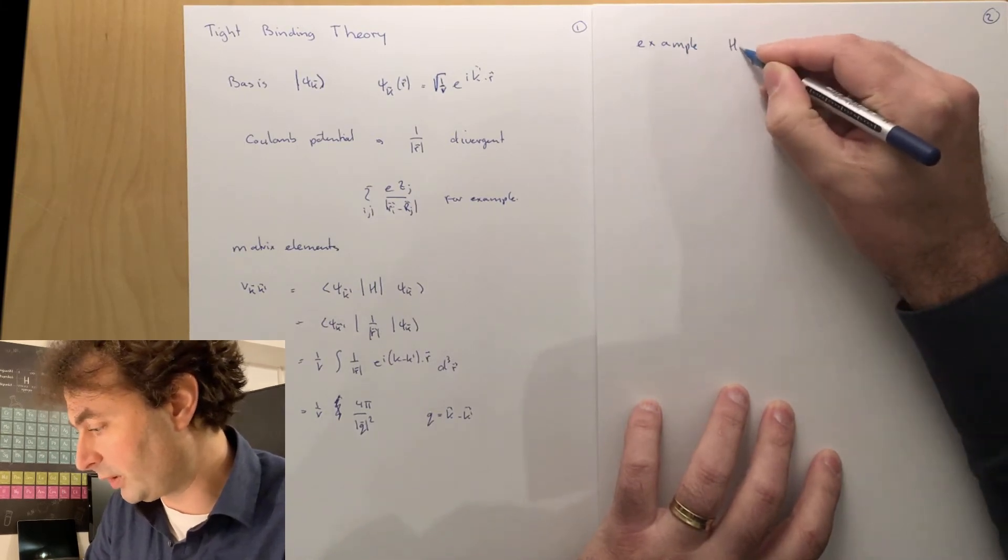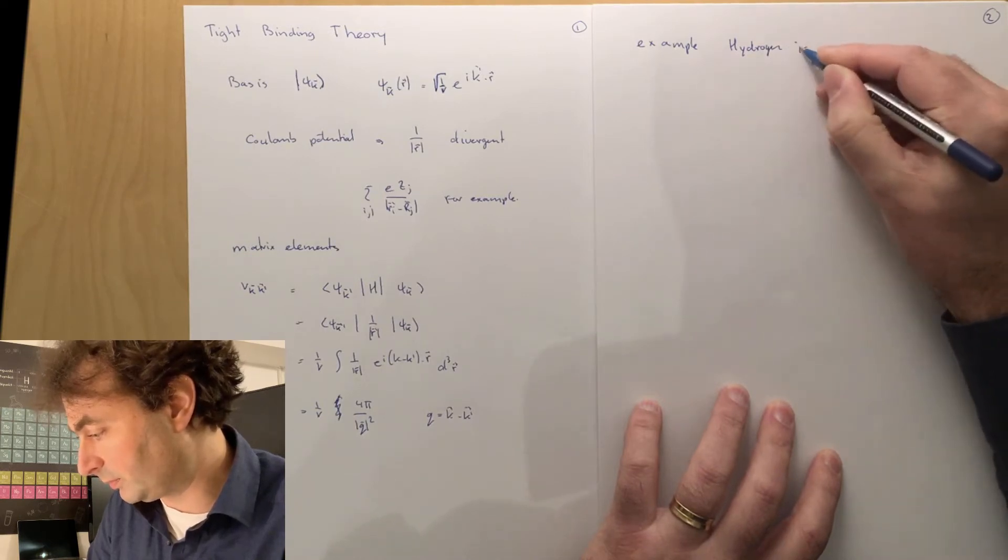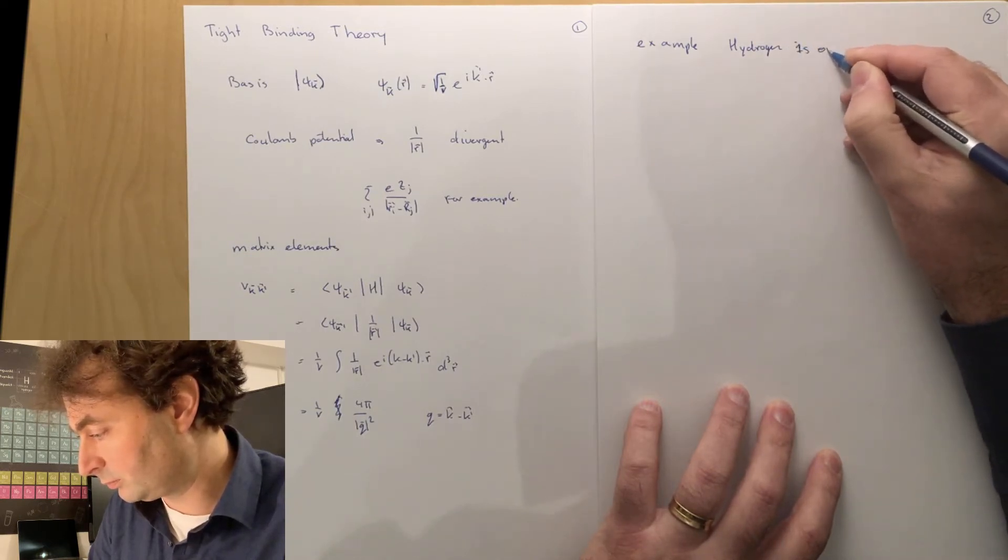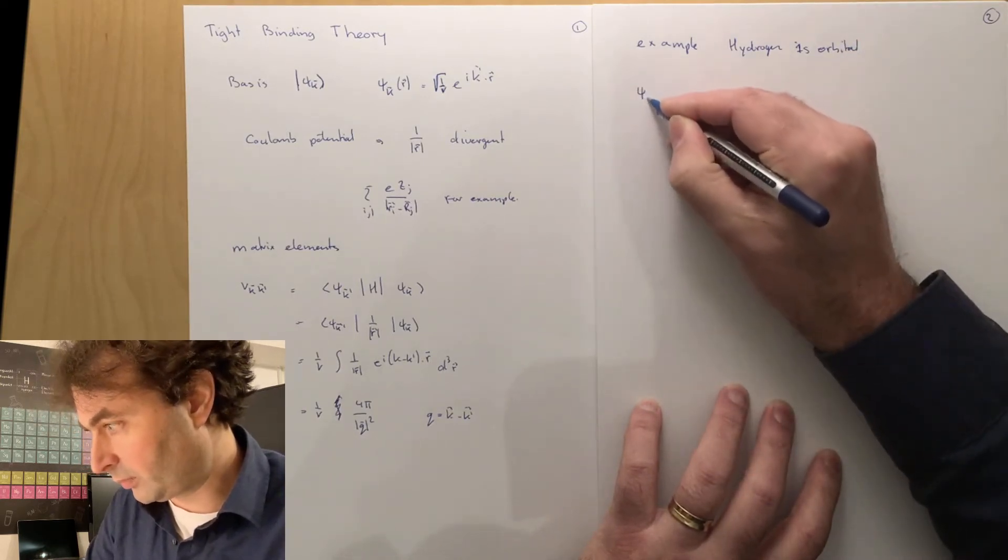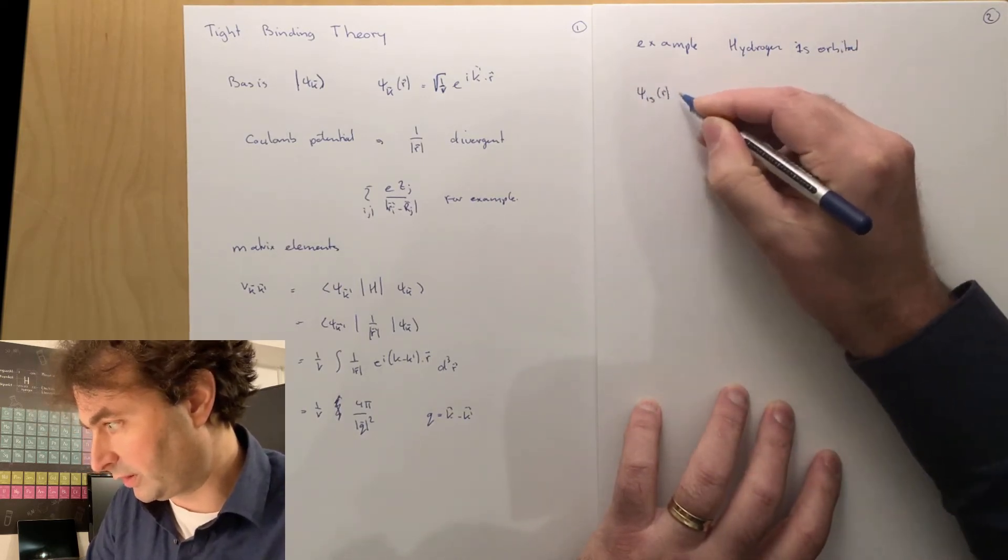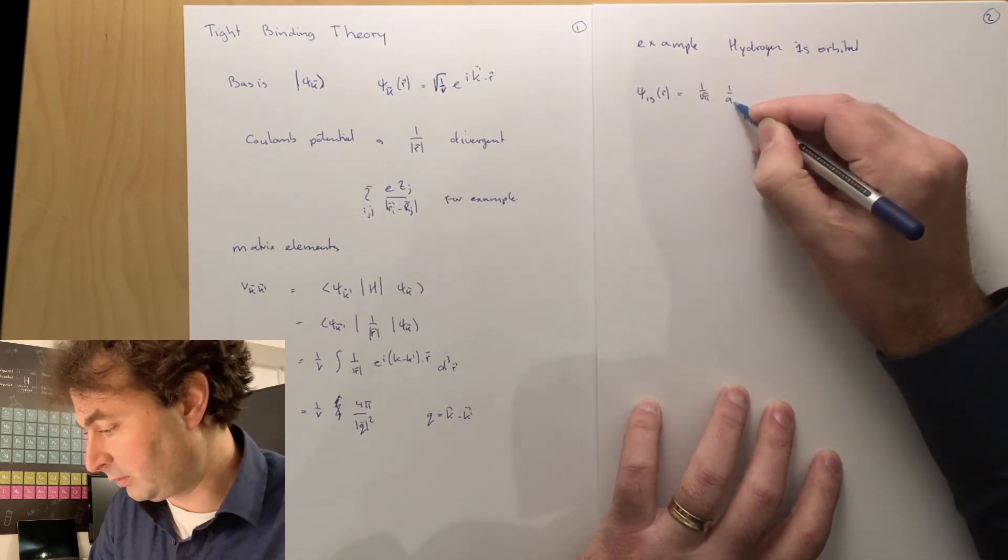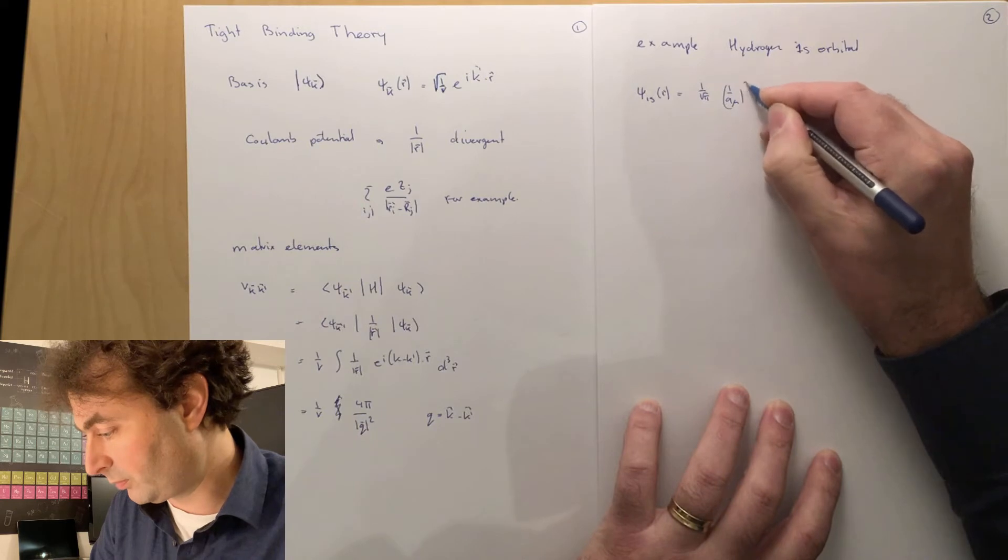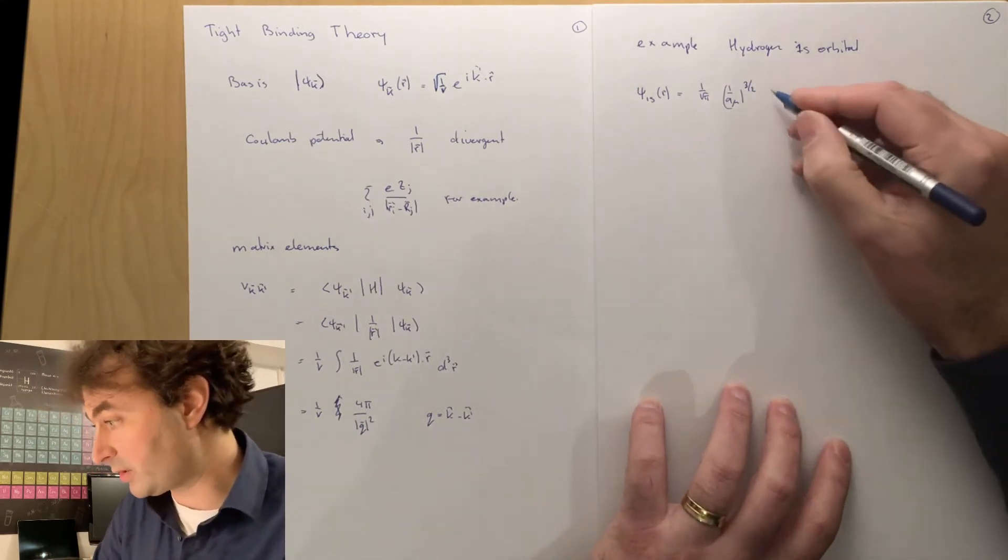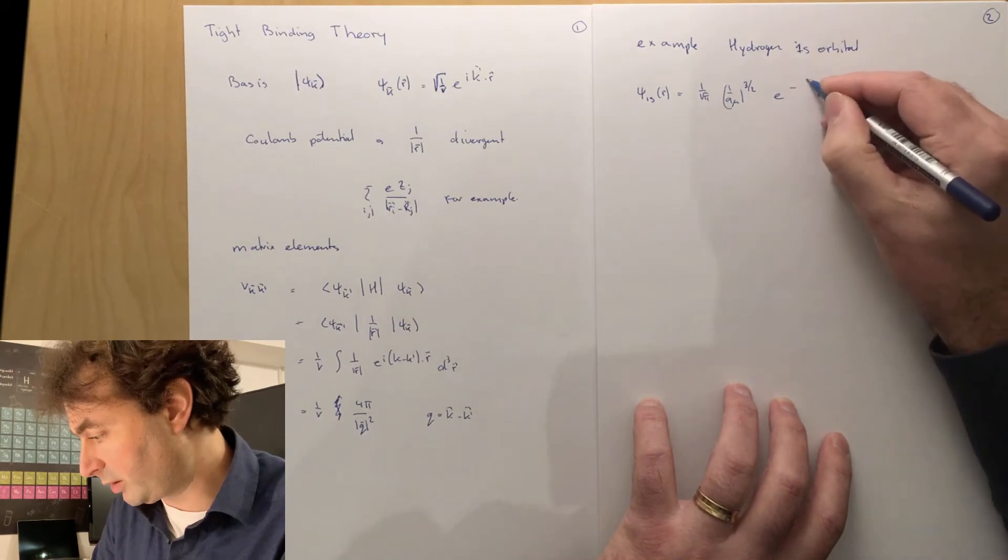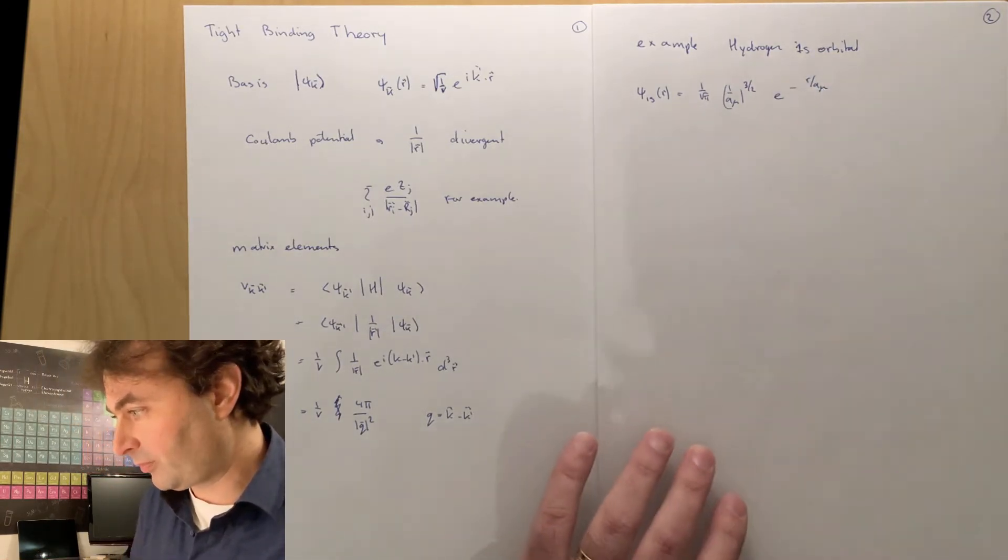So let's have a look at an example what this means. And we can just have a look at the hydrogen 1s orbital. We very well know what this eigenstate is: 1 over square root of pi, 1 over a mu to the power of 3, and that's the Bohr radius with the reduced mass, e to the minus r divided by a mu.